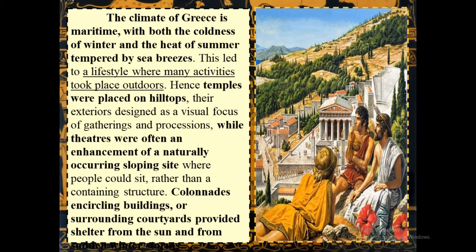The climate of Greece is maritime, with both the coldness of winter and the heat of summer tempered by sea breezes. This led to a lifestyle where many activities took place outdoors. Hence, temples were placed on hilltops, their exteriors designed as a visual focus of gathering and processions, while theatres were often an enhancement of a naturally occurring sloping site where people could sit. Colonnades encircling buildings or surrounding courtyards provided shelter from the sun and from sudden winter storms.